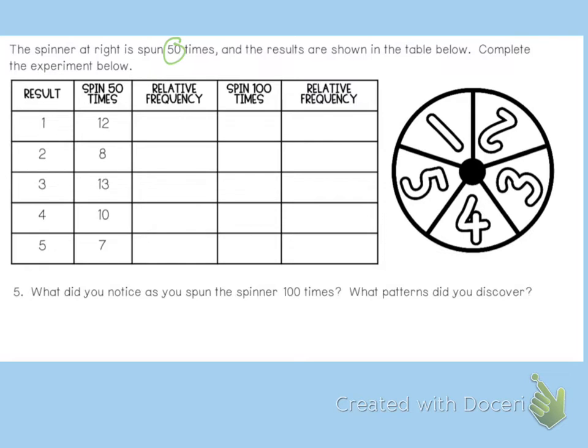So relative frequency, we said, was number of successful attempts over total number of trials. So relative frequency is that 12, and it said that it was spun 50 times. So they landed on 1 twelve times. So that would make that a 12 out of 50 attempts.